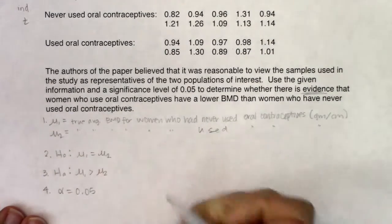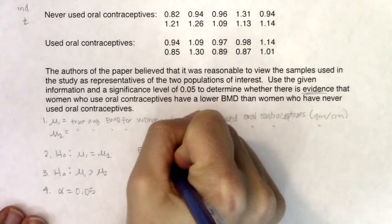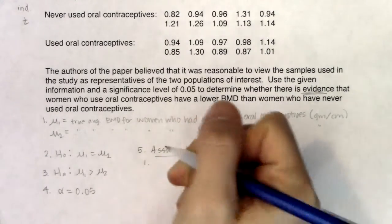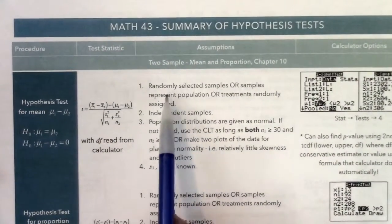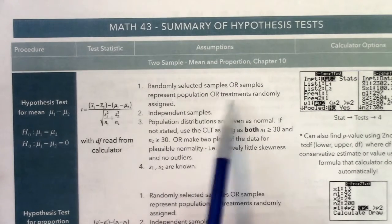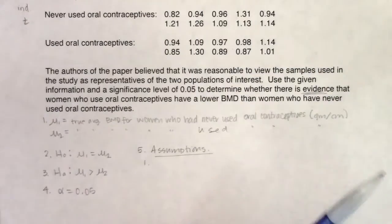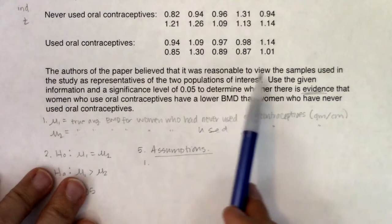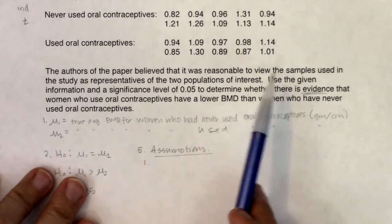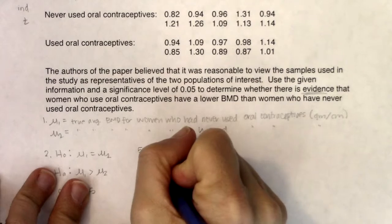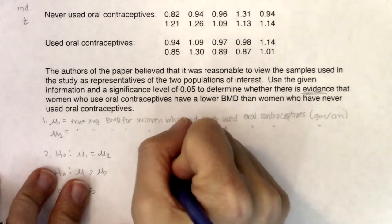Step four: our alpha is five percent. For our assumptions, I'm going to refer to the summary sheet. I need either randomly selected samples, samples that represent the population, or treatments that were randomly assigned. Looking at the problem, there's a blurb stating the authors believed it was reasonable to view the samples as representatives of the two populations of interest — so we have the option that our samples represent populations.